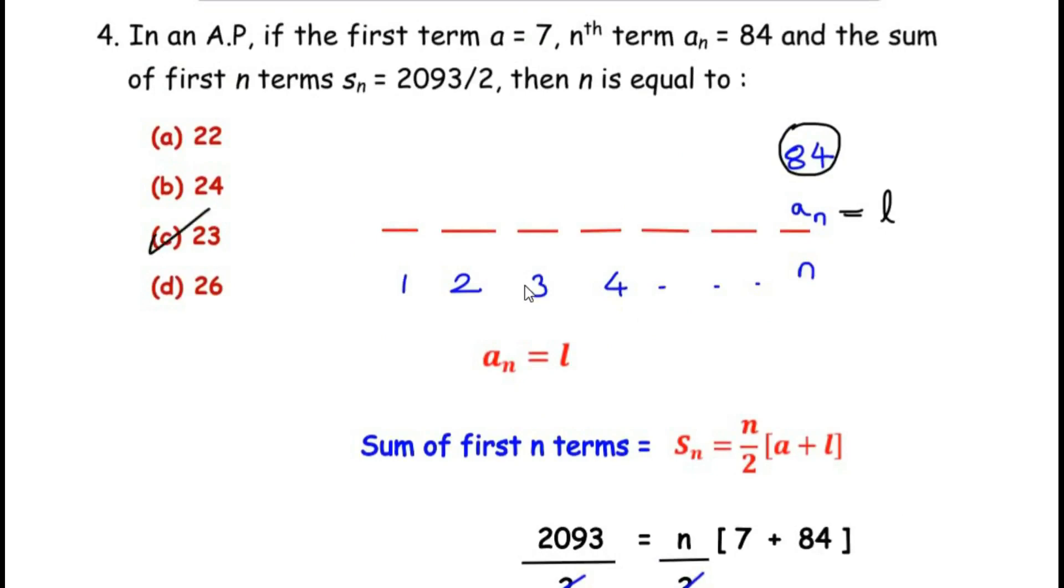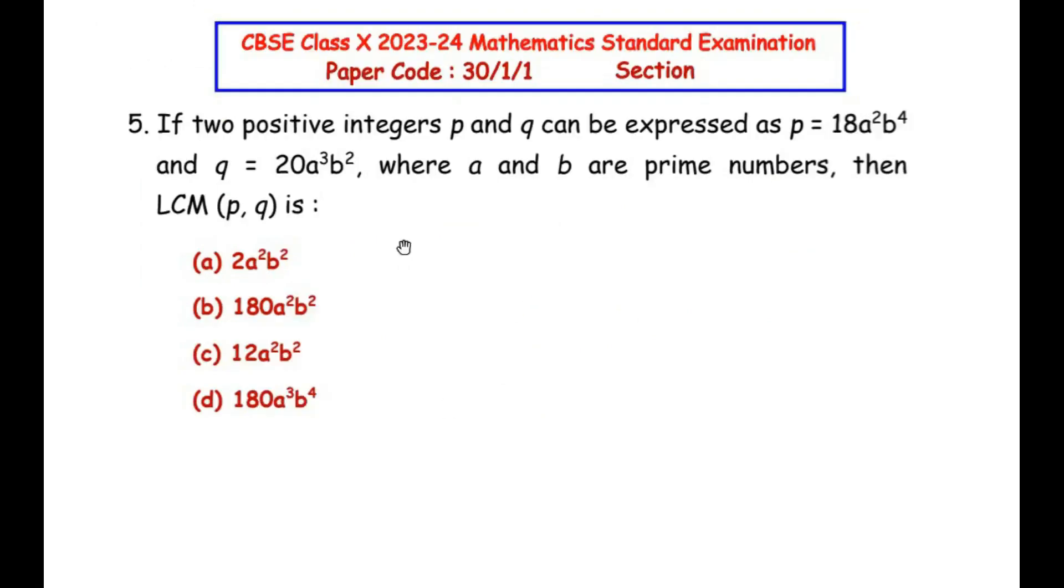Now let us move on to the next question. The fifth question is from the real numbers chapter. If two positive integers p and q can be expressed as p equals 18a²b⁴ and q equals 20a³b², where a and b are prime numbers, then the LCM of p and q is. Here we have to find out the LCM of these two given numbers, which is p and q.